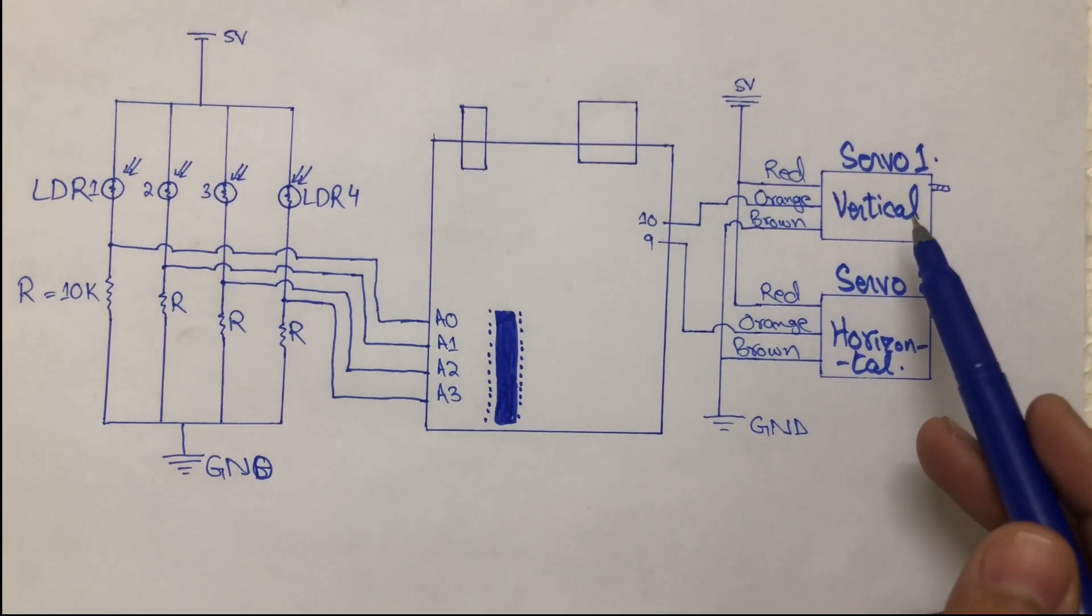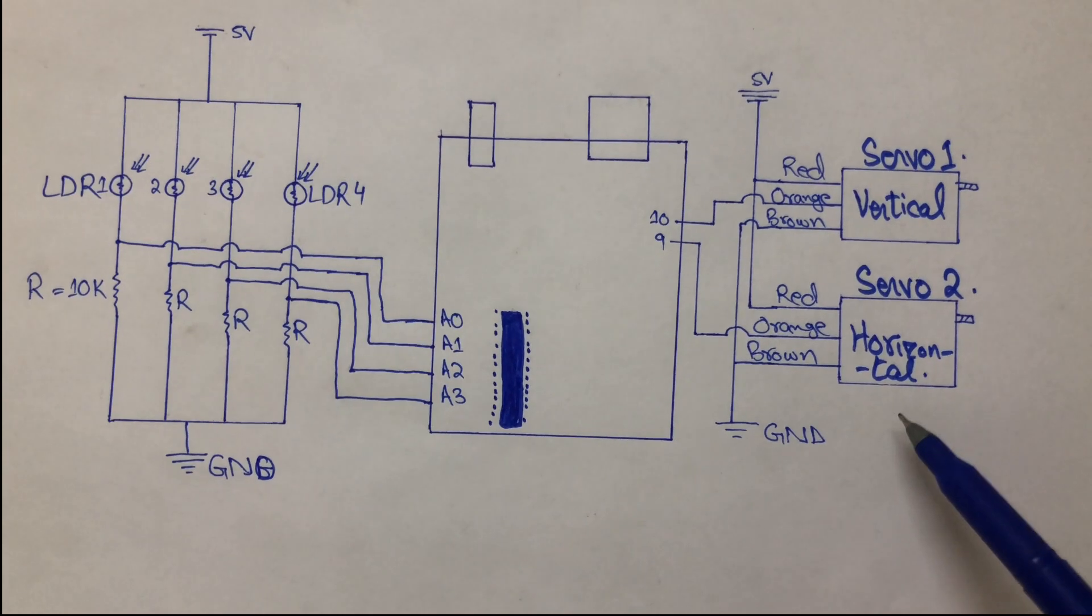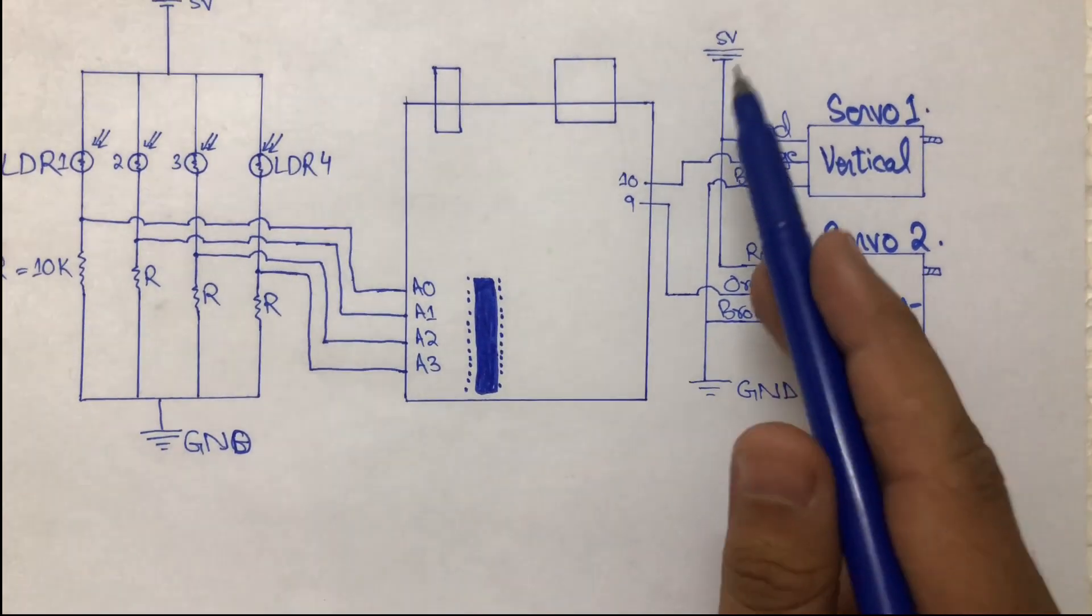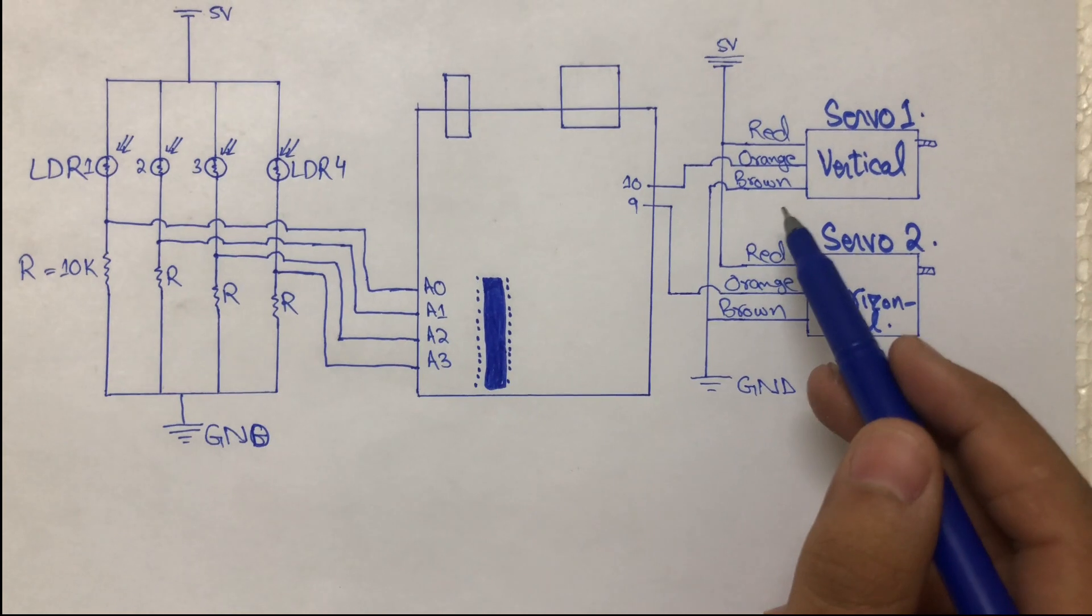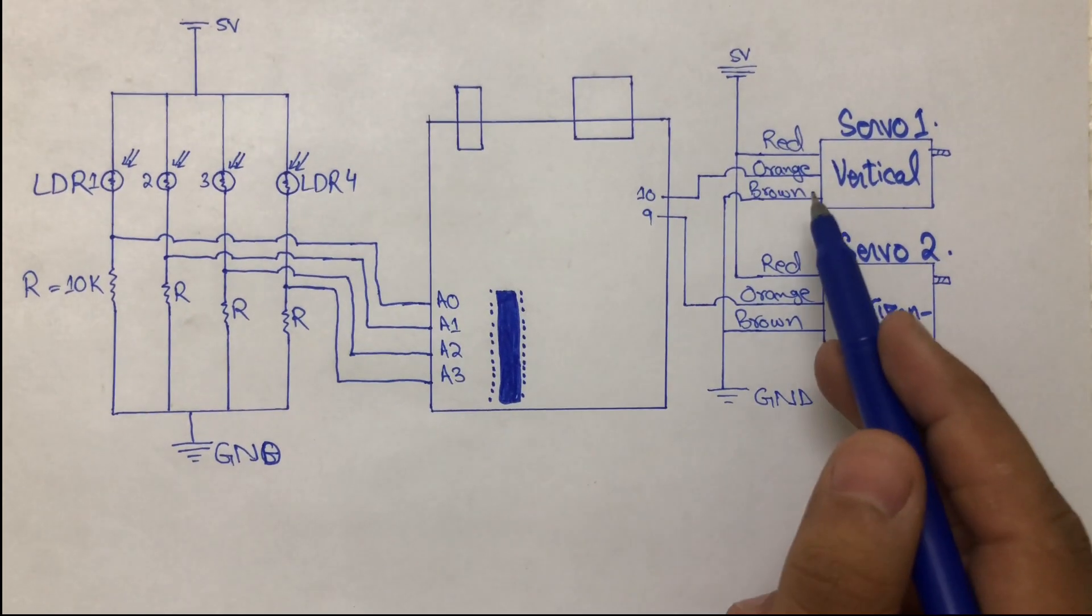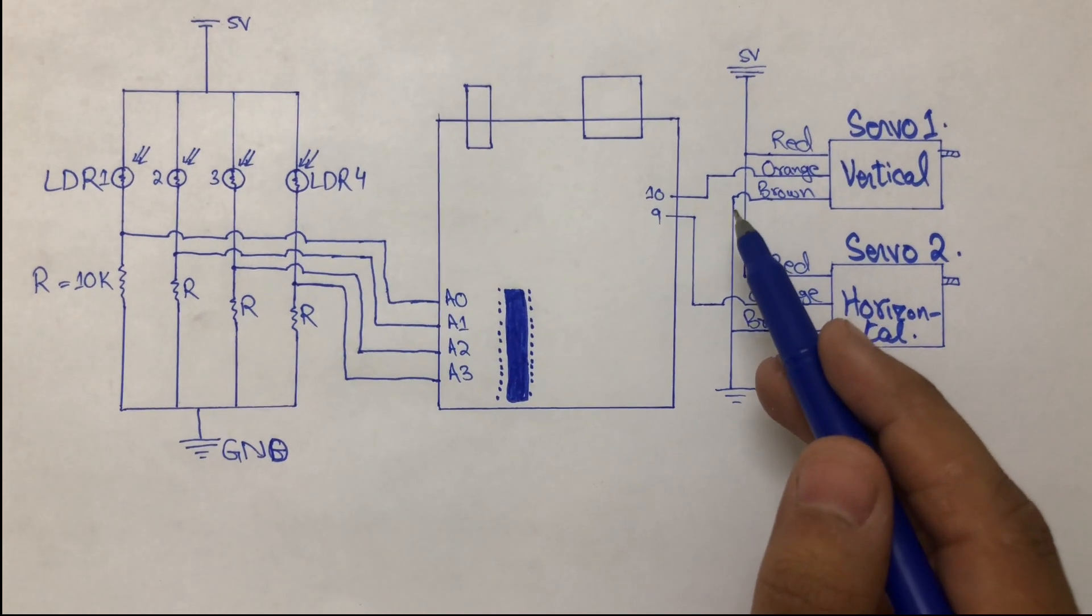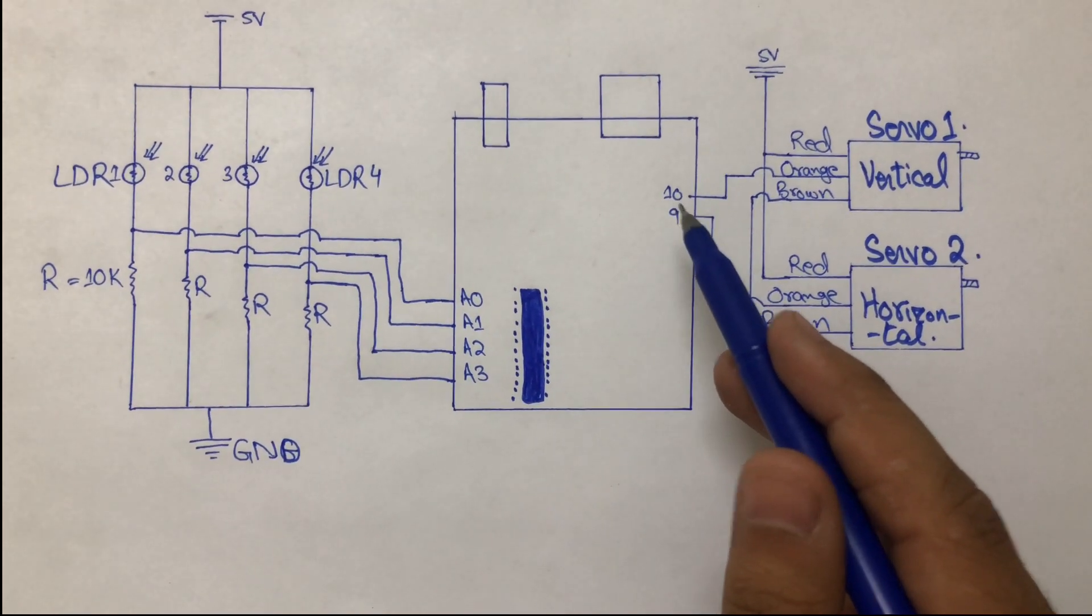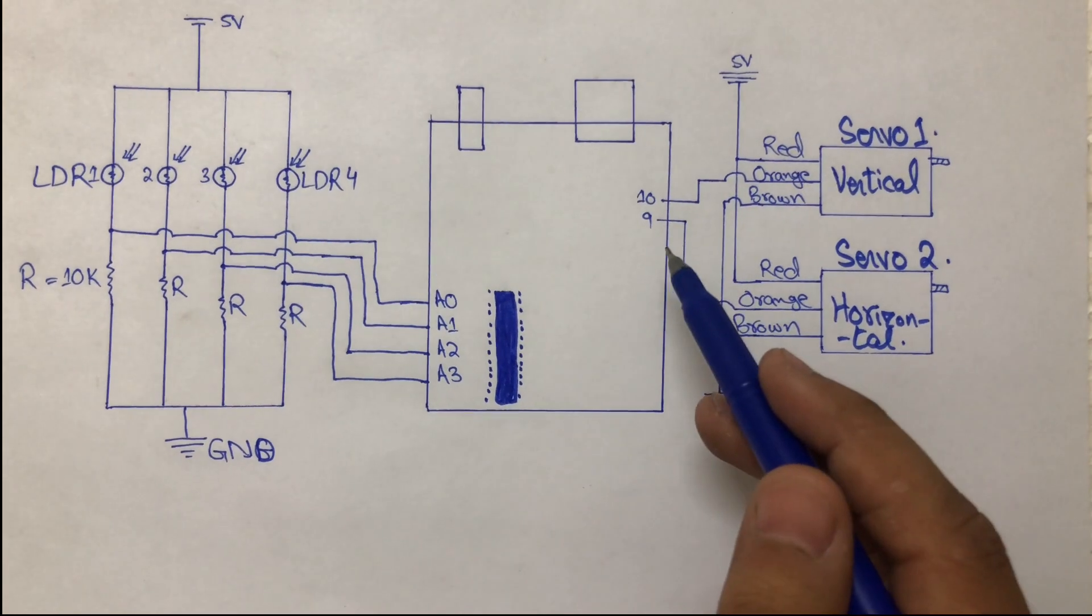We are using two servo motors. The red wire of the servo motor is connected to 5V supply and the brown wire, which is ground, is connected to ground. The orange wire, which is the PWM signal, is connected to pin 10 and pin 9 of the Arduino board.